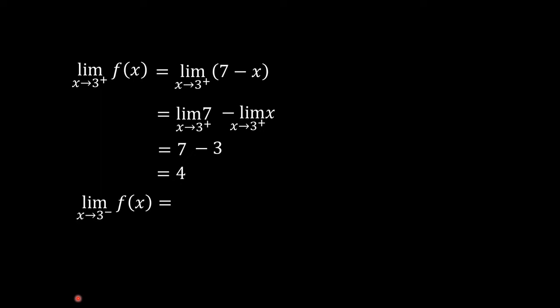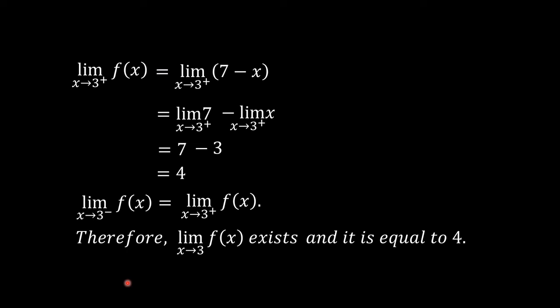So the limit of f of x as x approaches 3 from the left equals 4, and the limit of f of x as x approaches 3 from the right also equals 4. Therefore, the limit of f of x as x approaches 3 exists and is equal to 4.